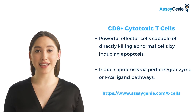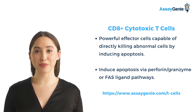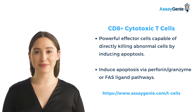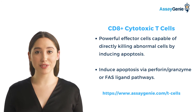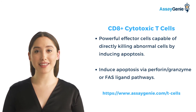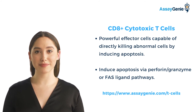Cytotoxic CD8 T lymphocytes directly kill abnormal cells by inducing apoptosis. If a killer T-cell encounters its cognate antigen on a host cell, it can induce apoptosis and release interleukin-2, which stimulates proliferation and clonal expansion of T-cells with the same antigen specificity.